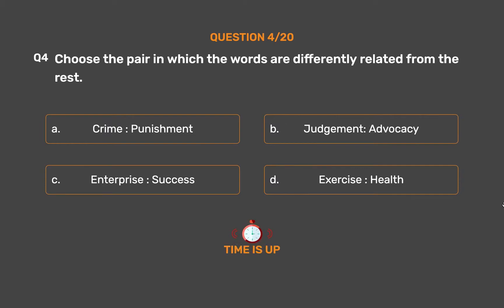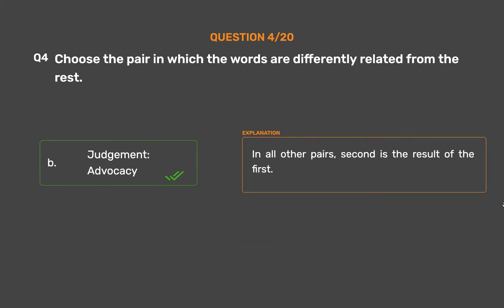The correct answer is Option B: Judgment, Advocacy. In all other pairs, the second is the result of the first.